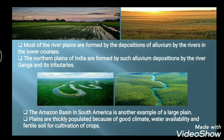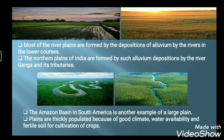Most river plains are formed by the deposition of alluvium by rivers in their lower courses. Perennial rivers bring down water along with alluvial soil and alluvium. These rivers form these areas by the deposition of alluvium. The great Northern Plains of India are formed by such alluvium depositions by the river Ganga and its different tributaries.